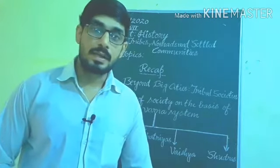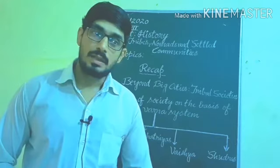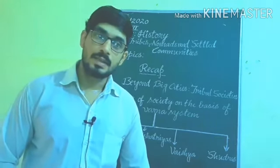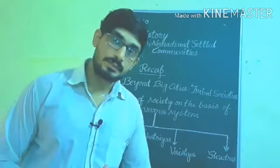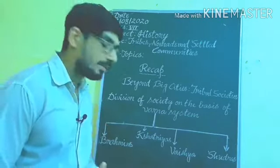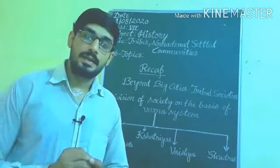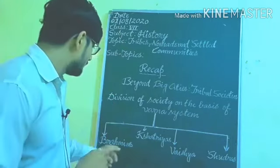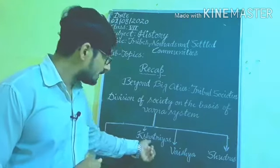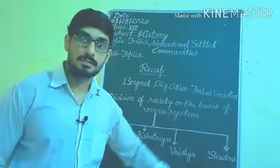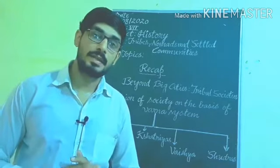In the last class we studied about tribal societies. In large part of the subcontinent, society was already divided according to the rules of Varna prescribed by the Brahmanas. Society was divided into four groups: Brahmins, Kshatriyas, Vaishyas, and Shudras.